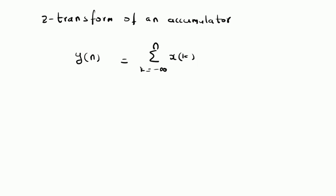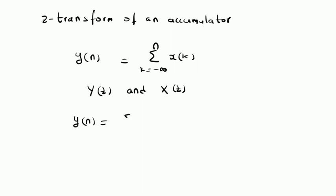Now, we want to find the Z-transform of this output y of n in terms of the Z-transform of the input x of k. That is, we want to find the relation between Y of z and X of z. To derive this, we first write the equation y of n is equal to summation k is equal to minus infinity to n of x of k. That is, we start with the definition of the system.